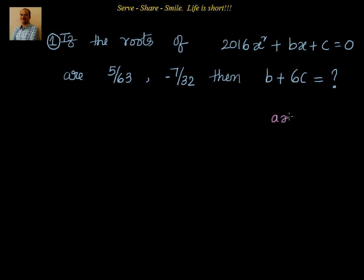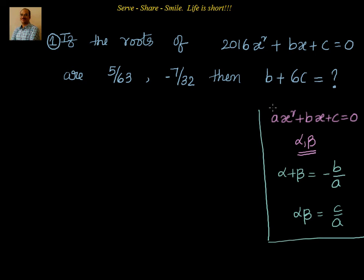If we have a quadratic equation ax² + bx + c = 0 and α, β are roots of that quadratic equation, then α + β = -b/a and αβ = c/a. This is the concept what we are going to use to solve this pretty straightforward question.